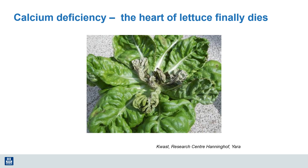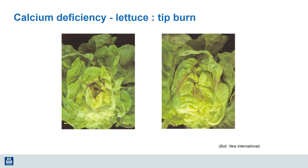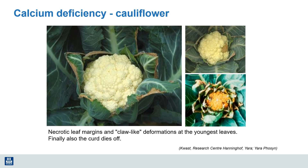We see calcium deficiency in lettuce commonly, where a lack of adequate calcium moving into young tissue causes cells to fail to develop properly, and those leaf tips do not accumulate sufficient calcium to form strong cell walls and membranes. We also observe calcium deficiency in brassica species such as cauliflower — a lack of calcium can affect the leaves, especially along the leaf margins, but more importantly it also impacts the quality of the harvested portion, that head of the cauliflower.